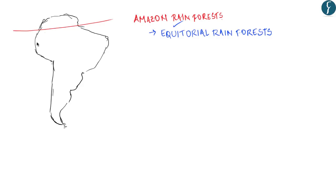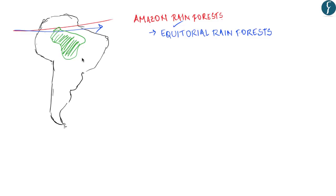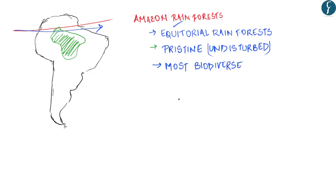Starting with the location and characteristics of the Amazon rainforest: it is in an equatorial region and observes a lot of rainfall along with constant high temperature throughout the year. Perennially high rainfall and high temperature lead to the development of the rainforest — the Amazon rainforest. It is the world's most primitive and pristine ecosystem as well as the most biodiverse region of the world. The genetic variety, species variety and ecosystem diversity found here is not observed anywhere else.